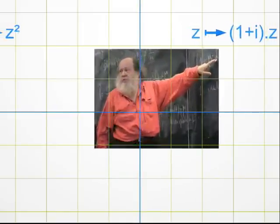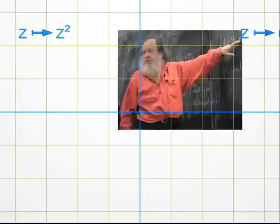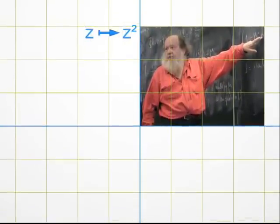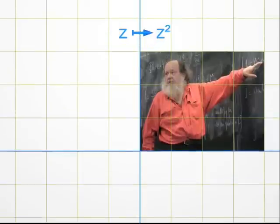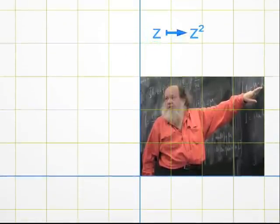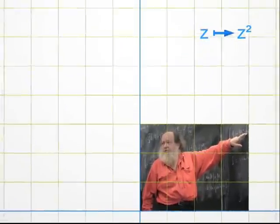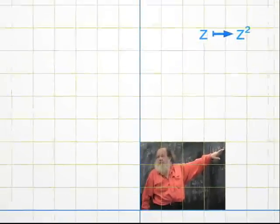More interesting. We are going to transform the points Z into their squares, Z multiplied by Z. Let's begin by placing the photo in a suitable place, flush against the coordinate axes. Then I zoom a little bit, since the squaring process will change the size of things.